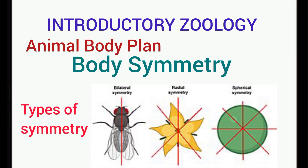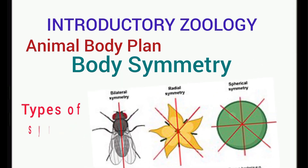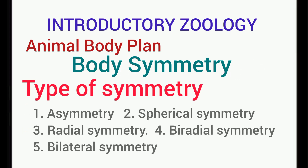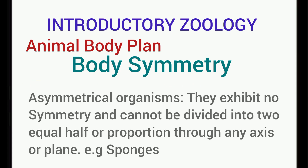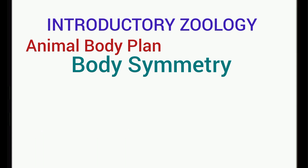Let's talk about the different kinds of symmetry. We have asymmetrical organisms, spherical symmetry, radial symmetry, bi-radial symmetry, and bilateral symmetry. Asymmetrical organisms have no symmetry and cannot be divided into two equal identical halves through any plane or line. An example of this is found in sponges.